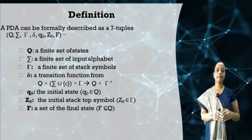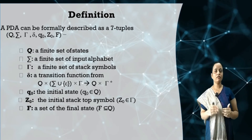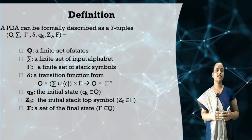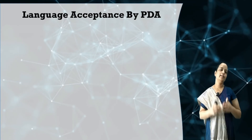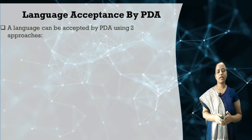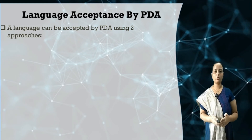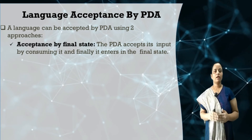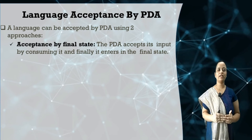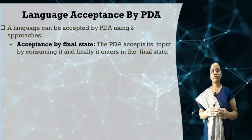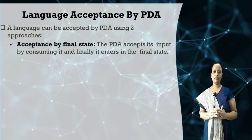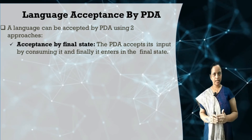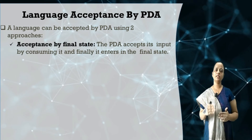PDA is defined by seven tuples where two extra tuples, Tau and Z0, are used for the stack — Tau for stack symbols and Z0 for the bottom of the stack. There are two approaches for a language to be accepted by a PDA. The first approach is acceptance by final state, the same as in finite automata: if we trace the string and at the end reach a final state (indicated by a double circle), the string is accepted.